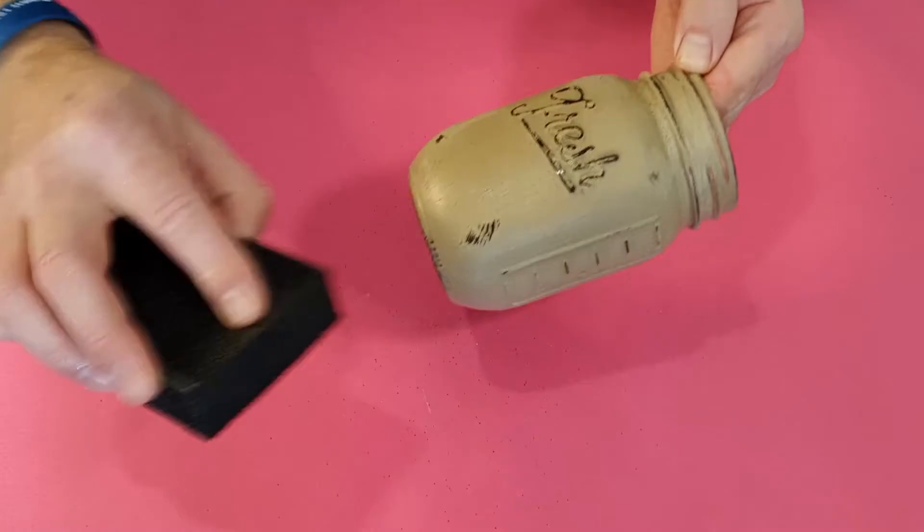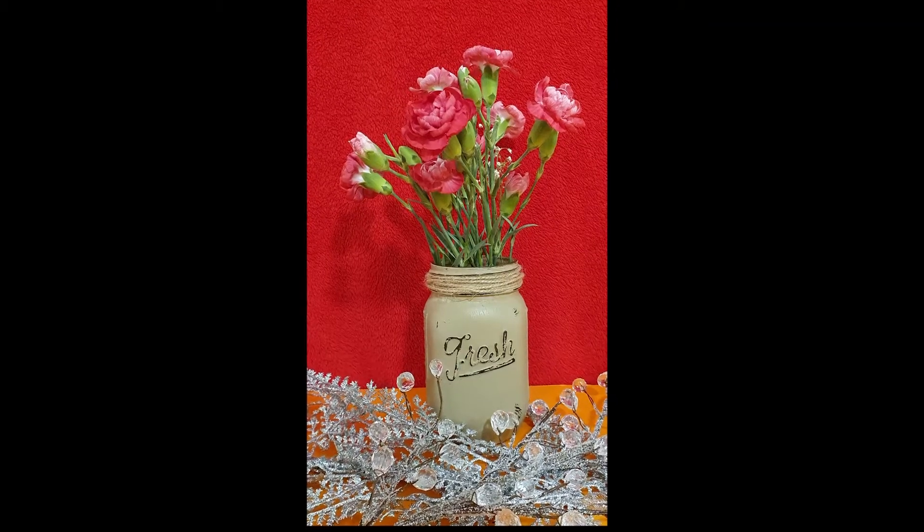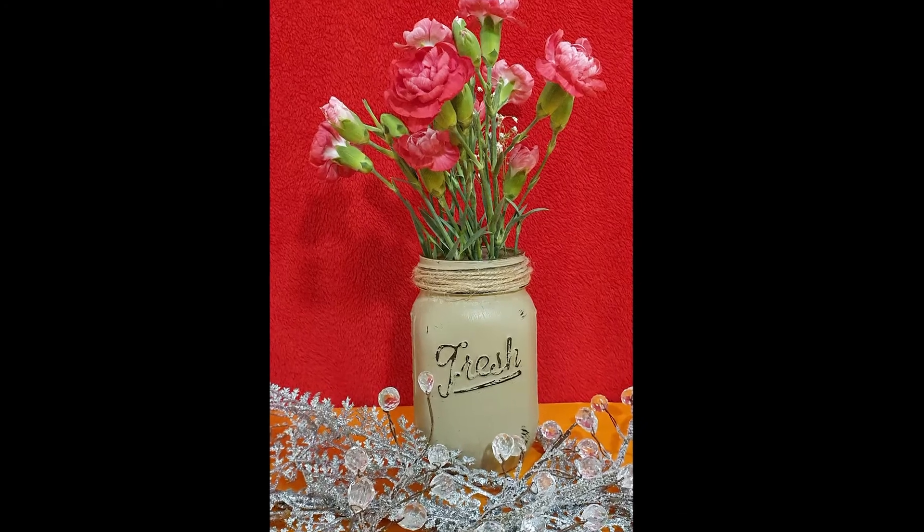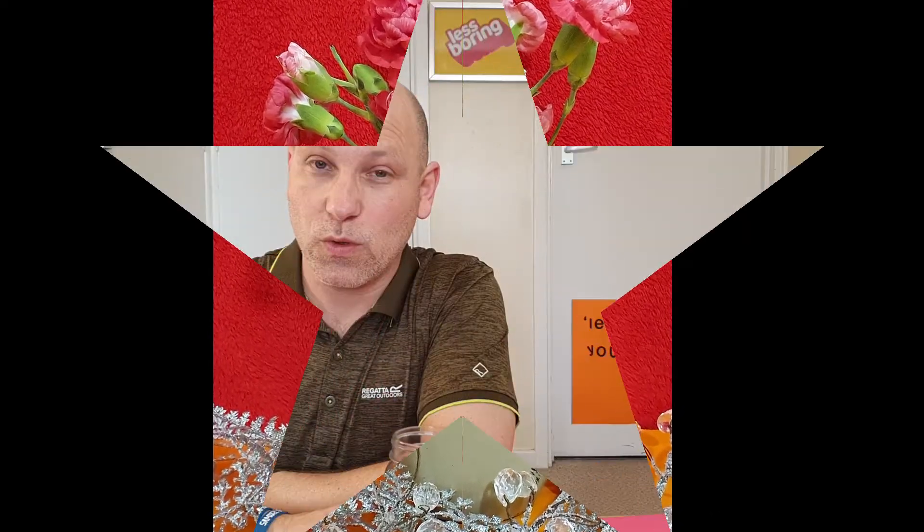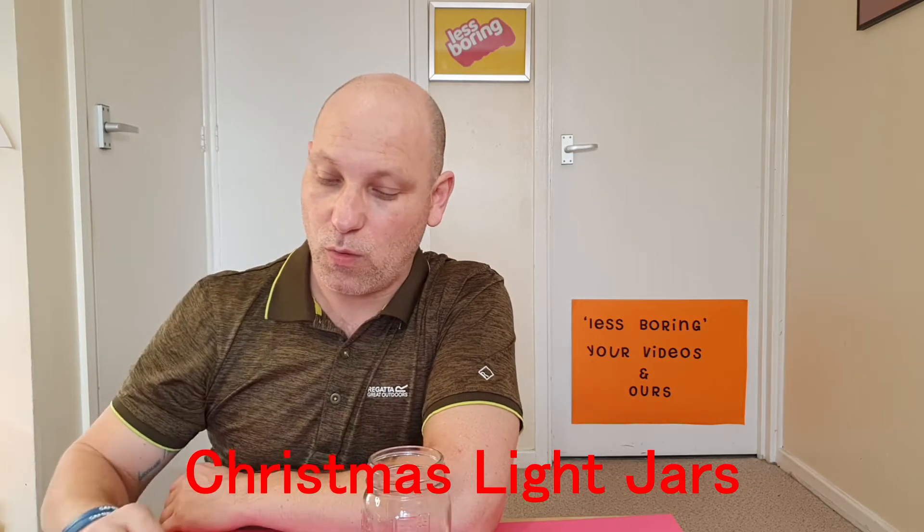Time to make a cool Christmas light. We need a glass jar. We're gonna need some Epsom salts and we're going to need some PVA glue. Now go with a craft PVA glue because you do want it to dry so there's a bit of a color underneath it, so it doesn't dry clear.